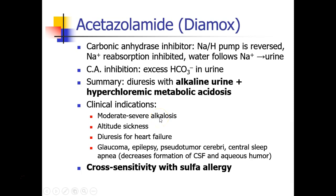Acetazolamide is used for a number of different indications. It can be used to treat moderate to severe metabolic alkalosis. It's commonly used in the treatment of altitude sickness, and it has been used as a diuretic for patients in heart failure. We also find it used for a variety of other diseases including glaucoma, epilepsy, pseudotumor cerebri, and central sleep apnea. Some of these treatments may be due to the ability of acetazolamide to decrease the formation of cerebrospinal fluid and aqueous humor, which is the fluid in the eye.